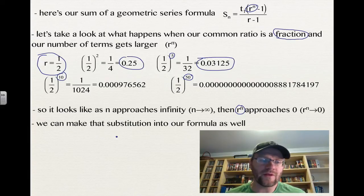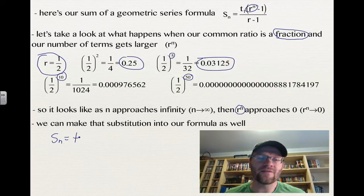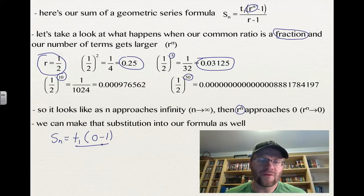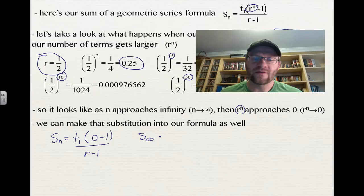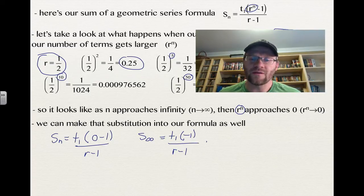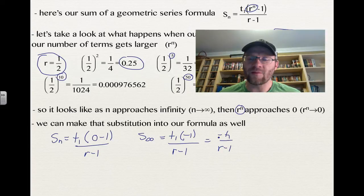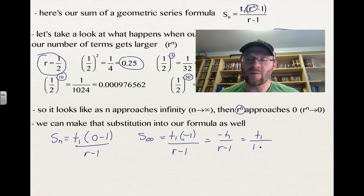We can make that substitution into our formula. Instead of having r to the n, we know that that thing is approaching basically 0. So now, this is actually the sum of an infinite number of series, so we can call it s with a little infinity sign there. That is t1 times negative 1, all over r minus 1. Generally, we don't write our top term being negative. If we make that top term positive, that changes the signs of both terms in the bottom. So you'll see your s infinity formula written as t1 over 1 minus r.